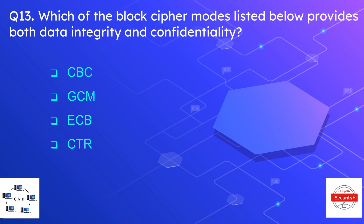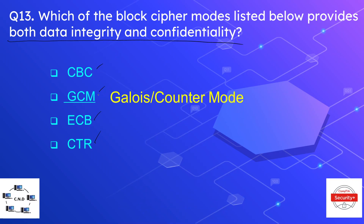The block cipher, as the name indicates, encrypts data in blocks or fragments, as opposed to the stream cipher which encrypts data one bit at a time in streams. Question number thirteen: which of the block cipher modes listed below provides both data integrity and confidentiality? The options are CBC, GCM, ECB, or CTR. The correct option is GCM, which stands for Galois Counter Mode.